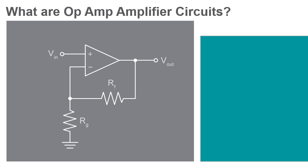For the purposes of this lab, we're looking specifically at operational amplifiers in closed-loop configurations, where a portion of the amplifier output signal is fed back into the input signal. In this configuration, the gain of the amplifier can be precisely controlled and even altered during operation.